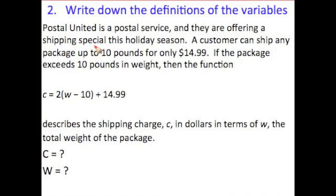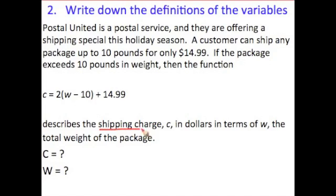So you read back through the problem. Postal United is the Postal Service, they're offering a shipping special this holiday season — nothing about C and W there. A customer can ship any package up to 10 pounds for only $14.99 — nothing about C or W. If a package exceeds 10 pounds in weight, then the function describes the shipping charge C. Right there, they defined for us what C is.